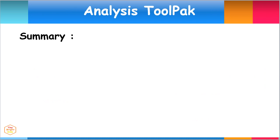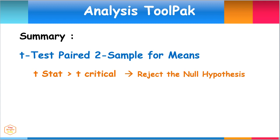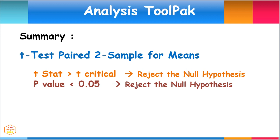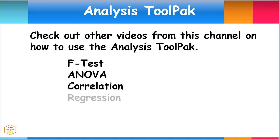In summary, we discussed how to use the Excel Analysis Tool Pack to conduct the T-Test Paired Two Sample for Means. We used the decision rules: if T-Stat is greater than T-Critical, then we reject the null hypothesis; also, if P-Value is less than 0.05, then we reject the null hypothesis. Please check out other videos from this channel on how to use the Analysis Tool Pack, the F-test, ANOVA, correlation, regression, and many more.